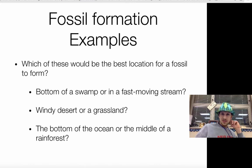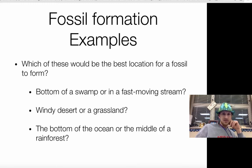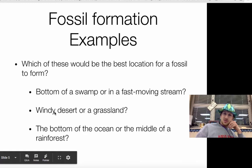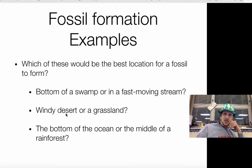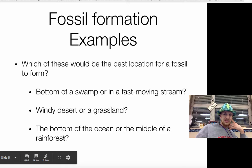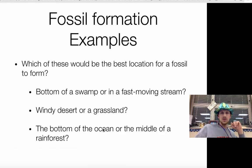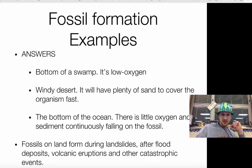Here are some example questions — try to answer these on your own. Which would be the best location for a fossil to form: the bottom of a swamp or a fast-moving river? A windy desert or a grassland? The bottom of the ocean or the middle of a rainforest? The bottom of the swamp is better because swamps don't have lots of oxygen and they're not moving around to break up the carcass. For the desert versus grassland, I'd go with desert because there are tons of sediments that can blow over and cover something. The last one — go with the bottom of the ocean, absolutely. The middle of the rainforest is not as good because it's not as easy to get covered up there.